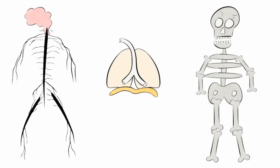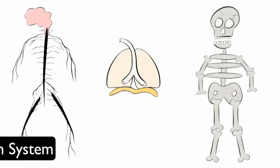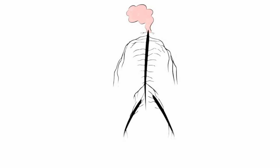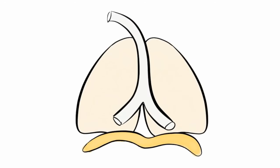An organ system is a collection of organs working together to perform jobs. Your brain is a part of the nervous system. Your brain, spinal cord, and nerves work together to collect and process information. Your lungs are a part of the respiratory system. Along with the diaphragm and others, they help you breathe.